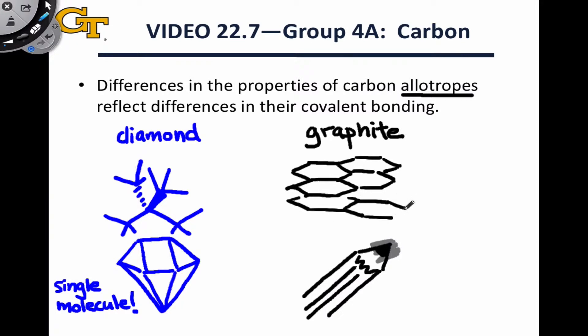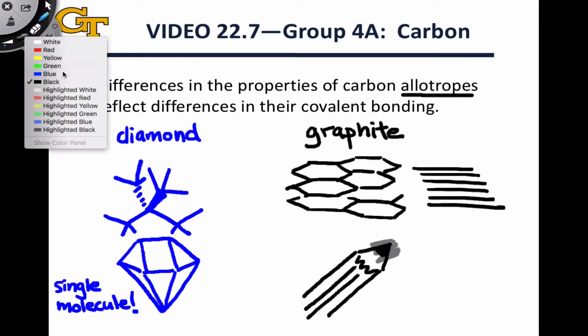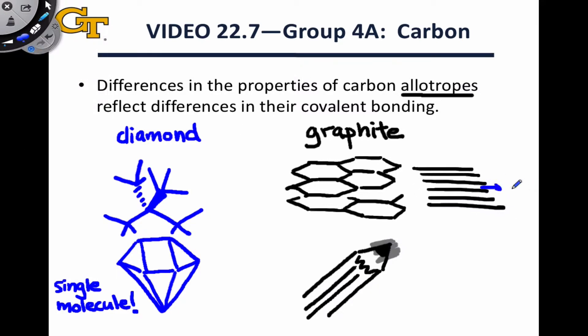Rather than being one big molecule like we saw for diamond, there are different sheets in graphite. From a slightly more zoomed-out view, we would see sheets of these planar carbon atoms stacked one on top of each other. This provides extra mobility relative to diamond.